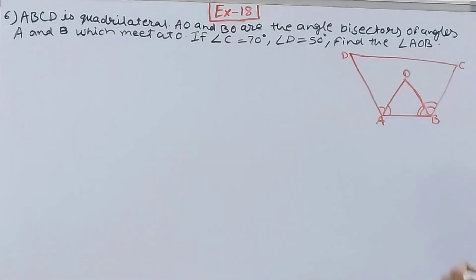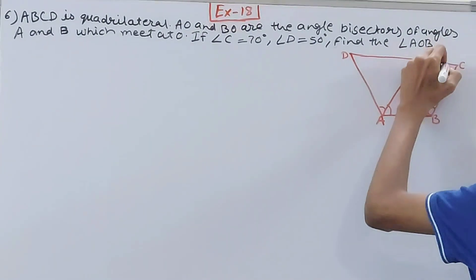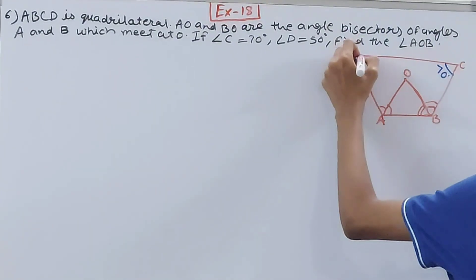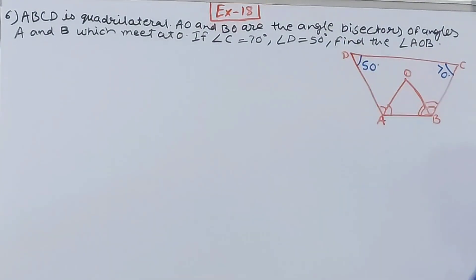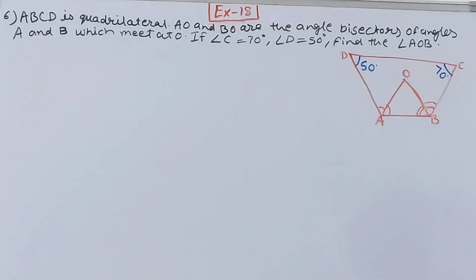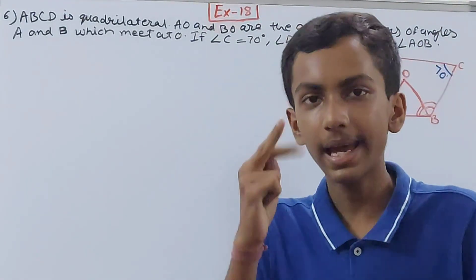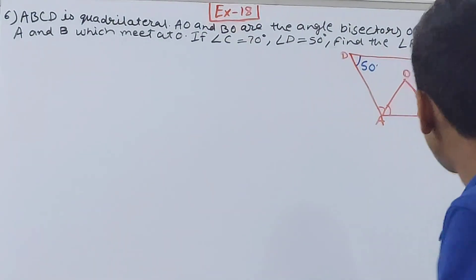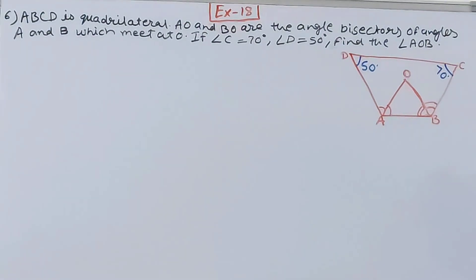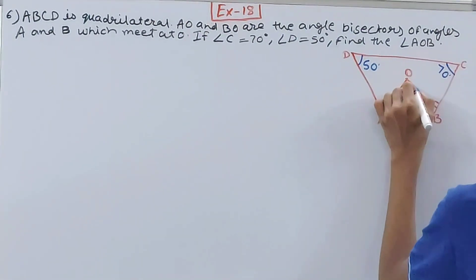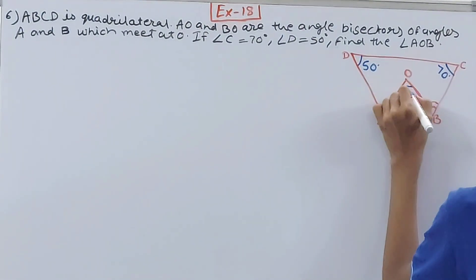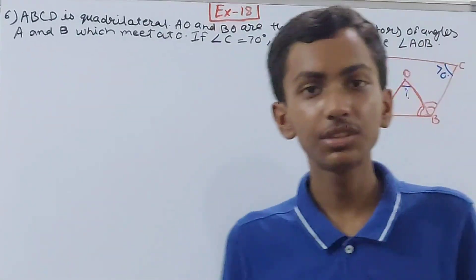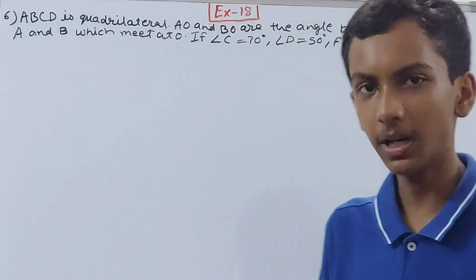It is given that angle C is 70 degrees and angle D is 50 degrees. We have to find the value of angle AOB, which lies inside triangle AOB.